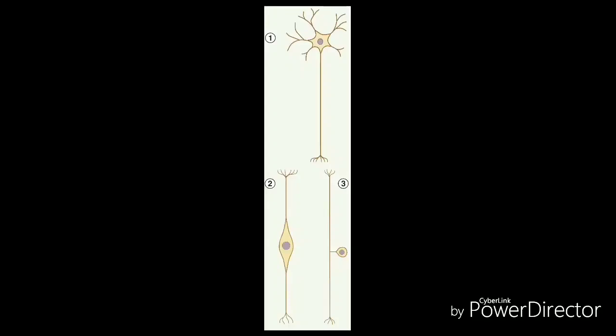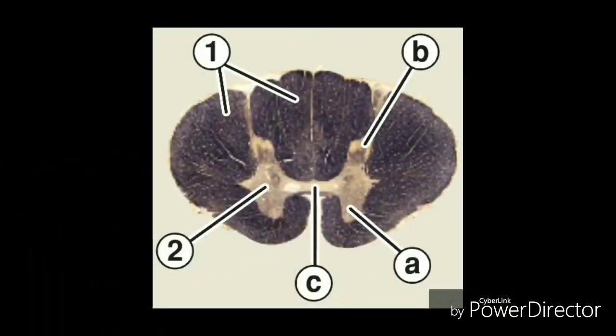Based on structure, neurons are classified as follows: Bipolar neurons have one dendrite and one axon. Multipolar neurons have three or more processes coming from the cell body. Generally, they have one axon and many dendrites.